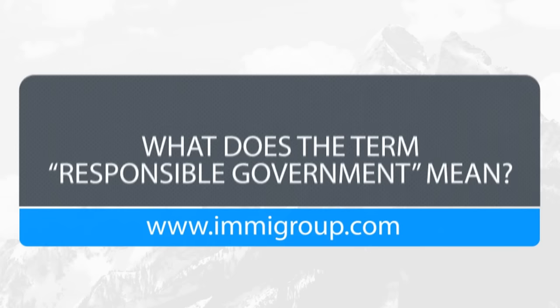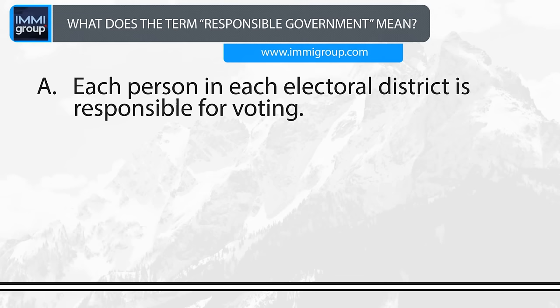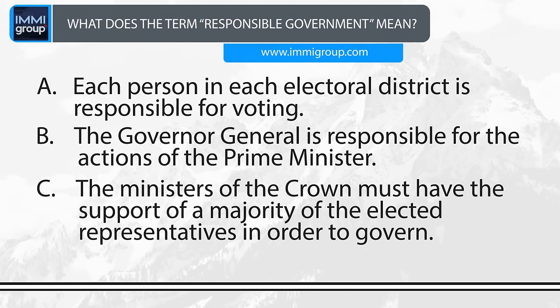What does the term responsible government mean? A. Each person in each electoral district is responsible for voting. B. The Governor General is responsible for the actions of the Prime Minister. C. The ministers of the Crown must have the support of a majority of the elected representatives in order to govern.